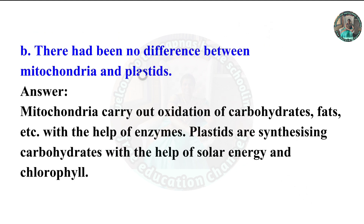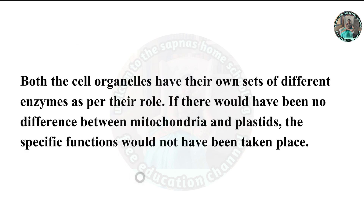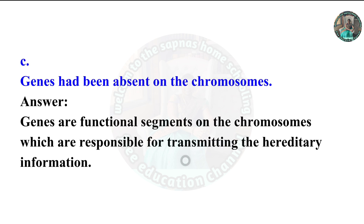Part B: If there had been no difference between mitochondria and plastids. Mitochondria carry out oxidation of carbohydrates, fats, etc., with the help of enzymes. Plastids synthesize carbohydrates with the help of solar energy and chlorophyll. Both organelles have their own sets of different enzymes as per their role. If there were no difference between them, their specific functions would not have taken place. Part C: If genes had been absent on the chromosomes — genes are functional segments on chromosomes responsible for transmitting hereditary information.